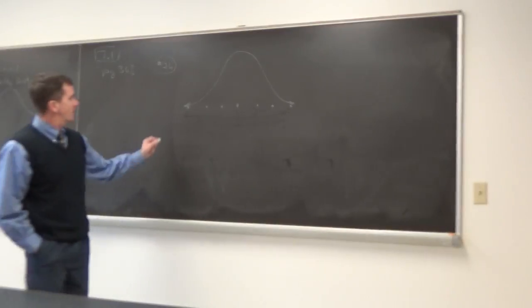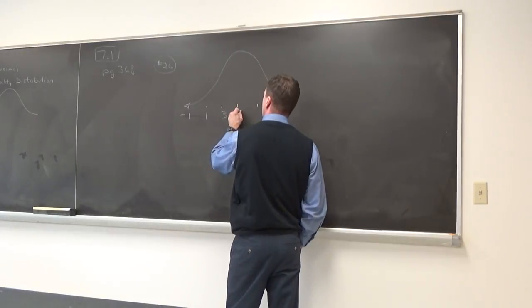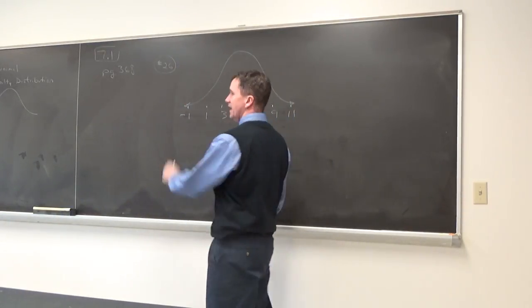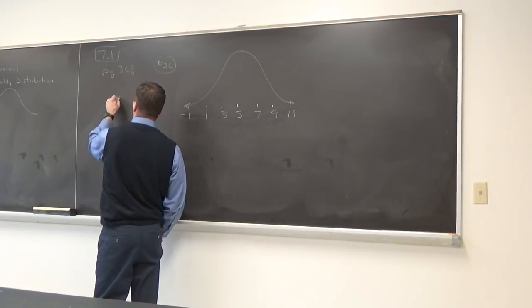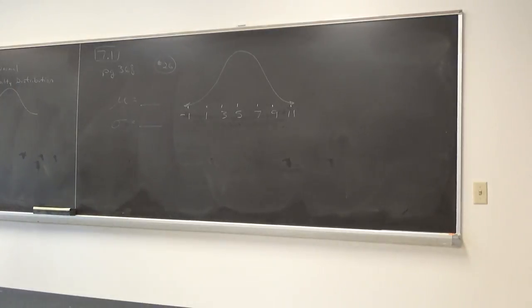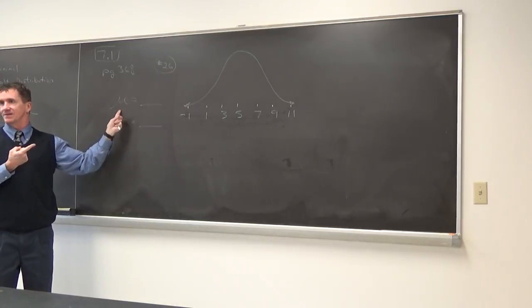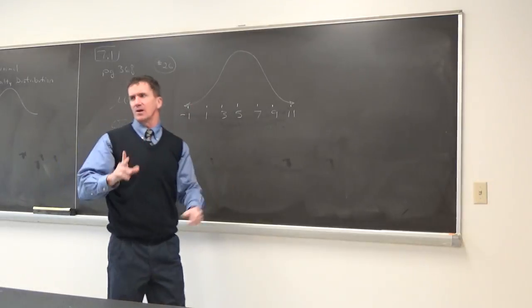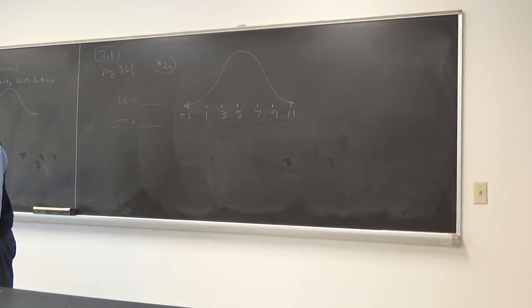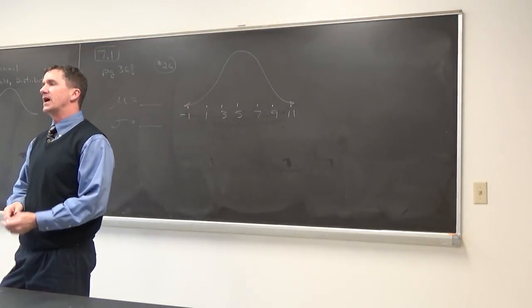In this problem, they already put numbers down here. They've got negative one here, a one, a three, a five, they've got a seven, nine, and eleven here. And they did state this is the Normal Curve.